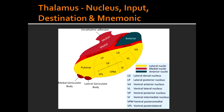Some of the thalamic nuclei include VPL (Ventral Posterior Lateral Nucleus), VPM (Ventral Posterior Medial Nucleus), LGN (Lateral Geniculate Nucleus), MGN (Medial Geniculate Nucleus), and VL (Ventral Lateral Nucleus). The VPL gets its input information from the spinothalamic tract, the dorsal columns, and the medial lemniscus.